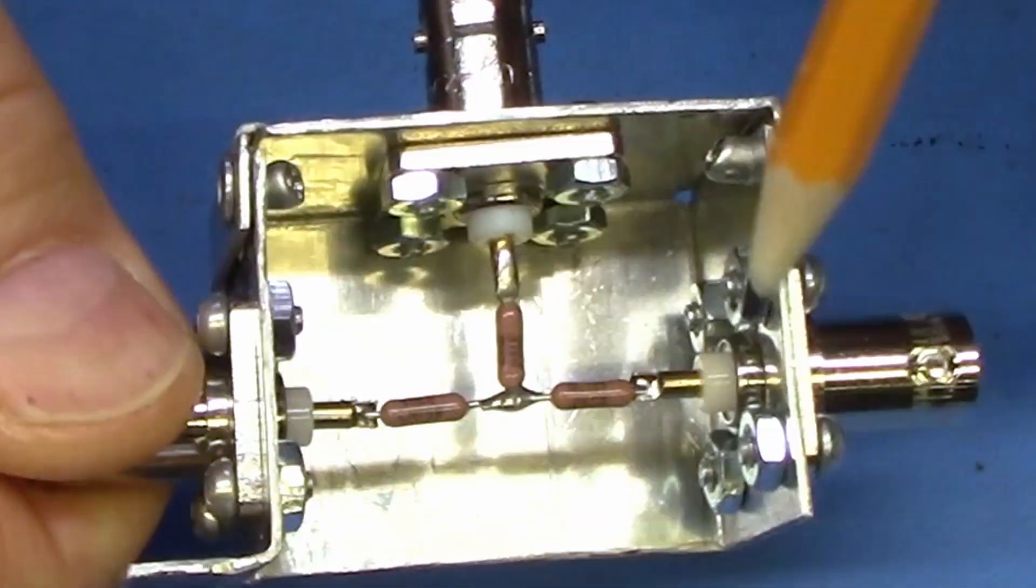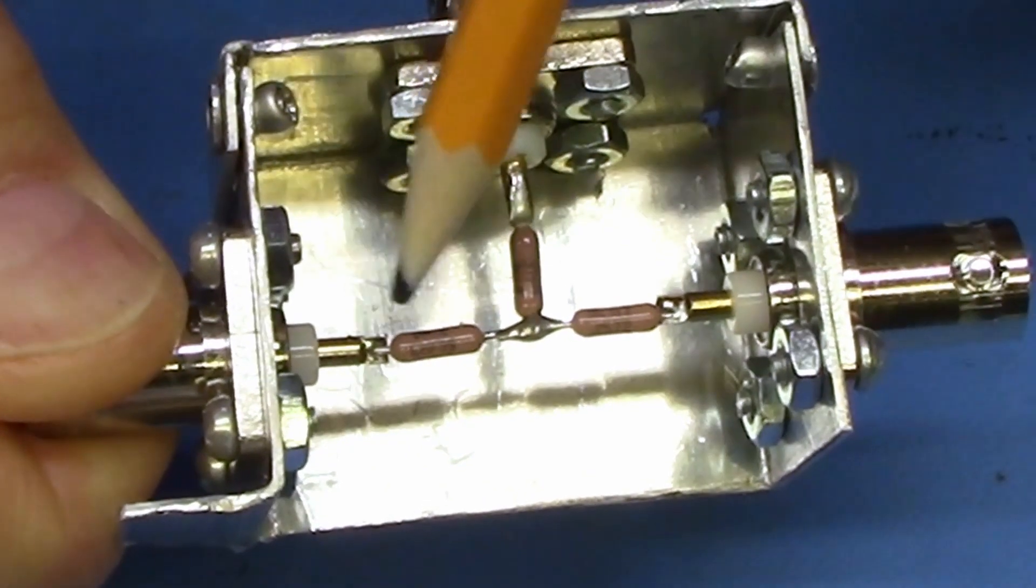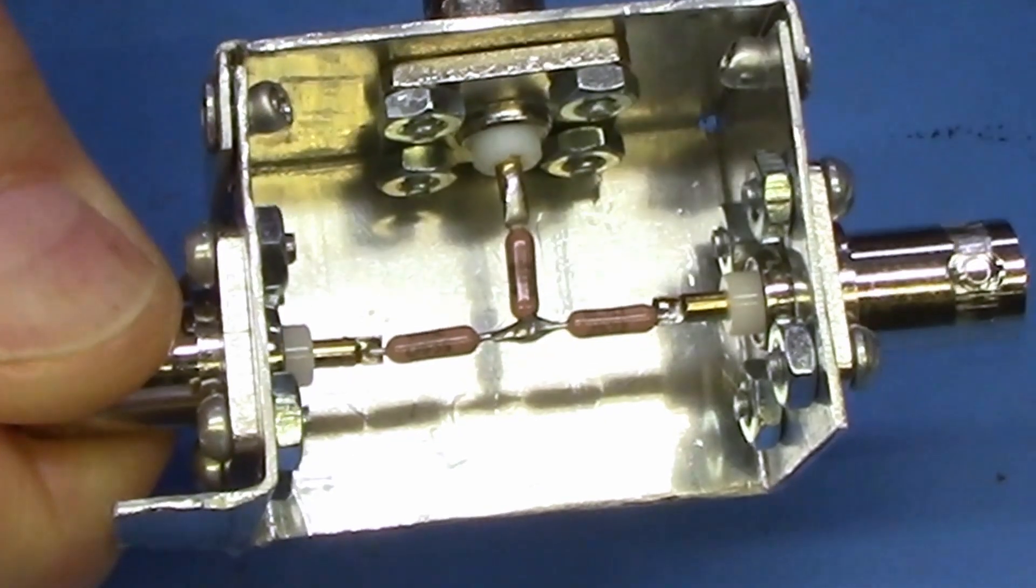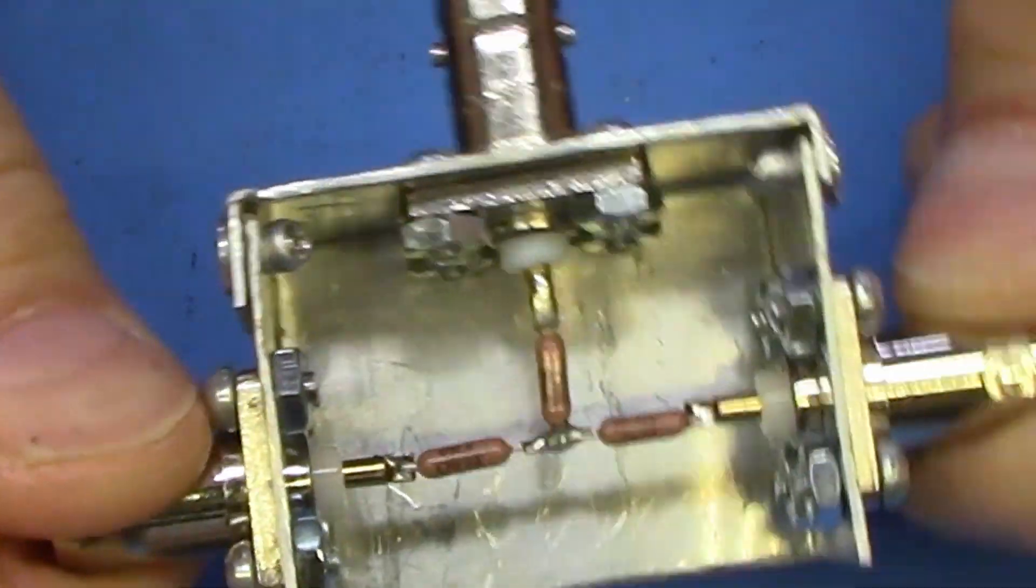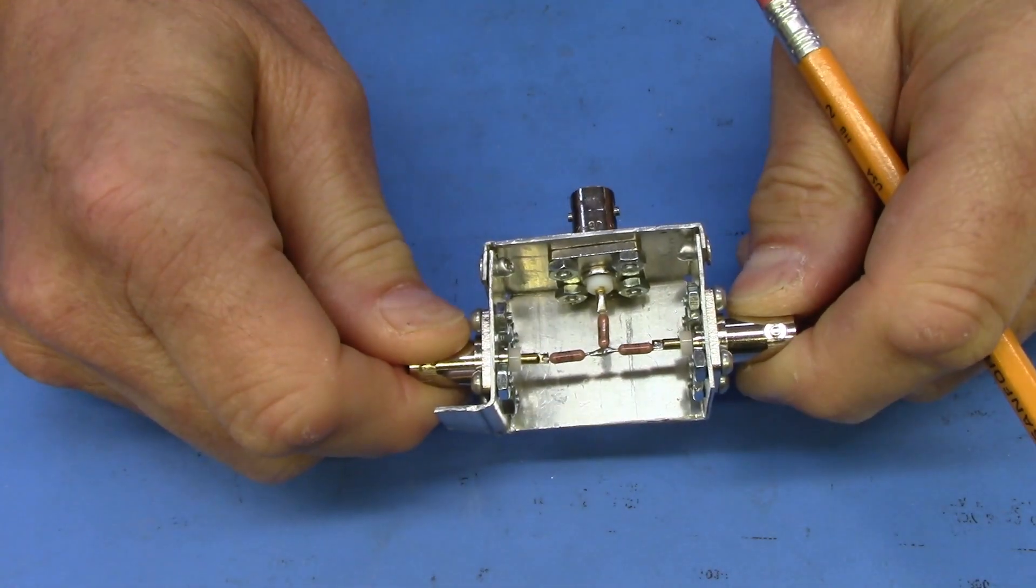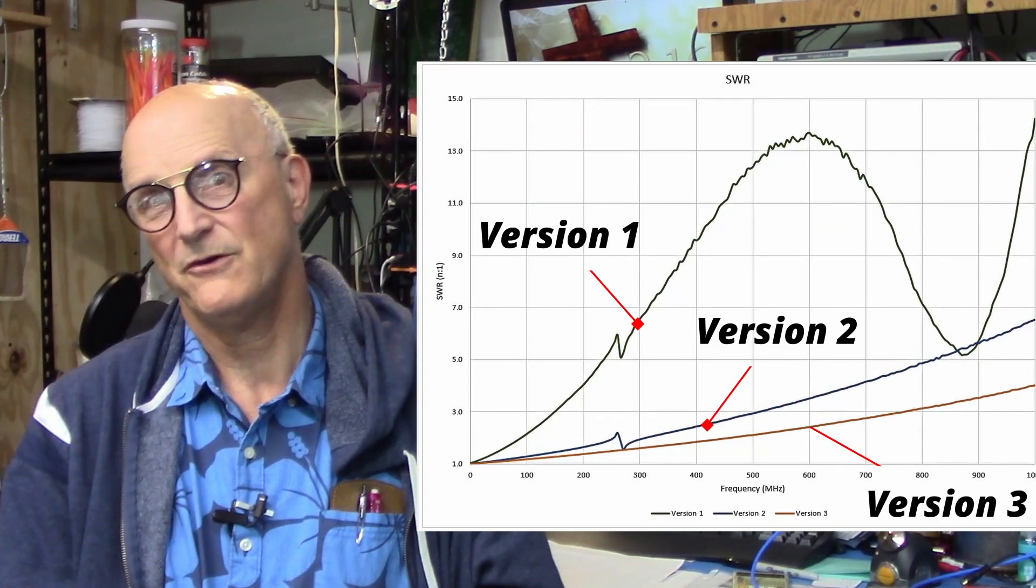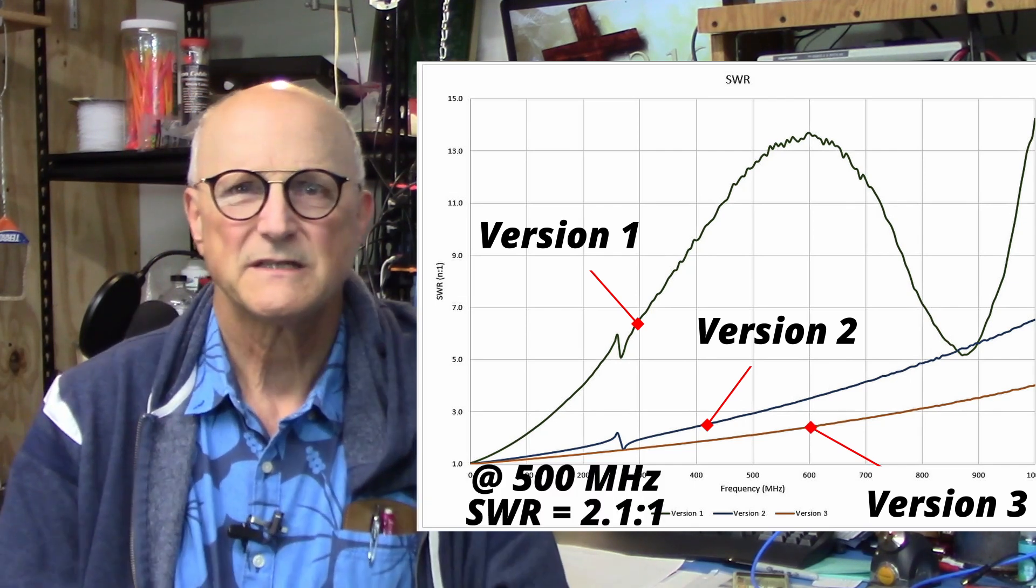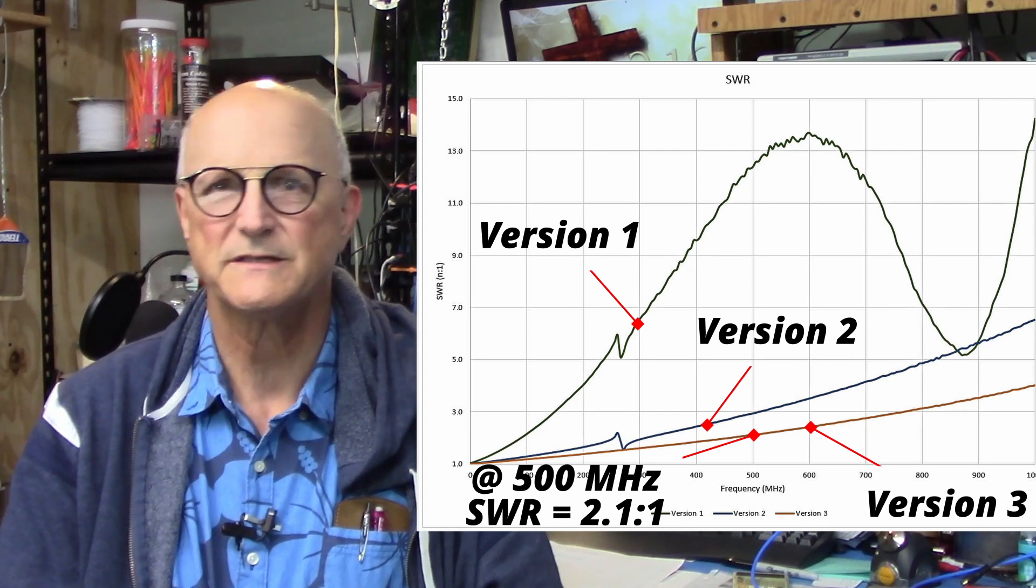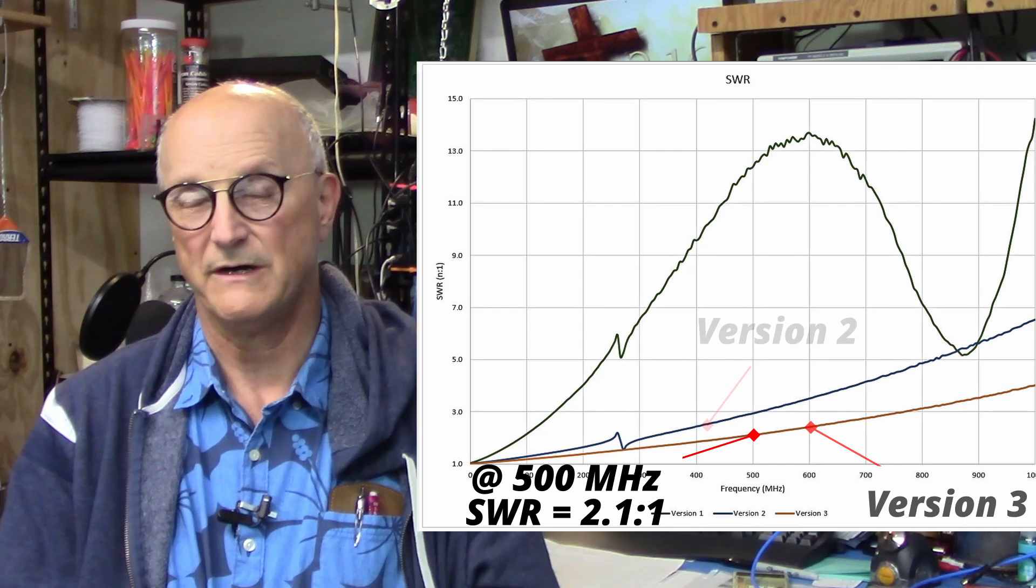I mean, look at this. There are no leads whatsoever here, just the resistor connected directly to the connectors. This is as short as you can get those leads. Surely, this is going to work perfectly. Yes, it worked a lot better, as we can see here with the SWR plot. The SWR at 500 megahertz is 2.1 to 1 as compared to version 2's nearly 3 to 1 SWR.